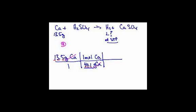Now I want the calcium to go away and to become hydrogen gas. So Ca goes in the bottom — because it wants to go away — and then moles of hydrogen on top. The mole ratio comes from the balanced equation. This is one-to-one-to-one-to-one, so this is a very easy one-to-one mole ratio. And now my moles of calcium can cancel.